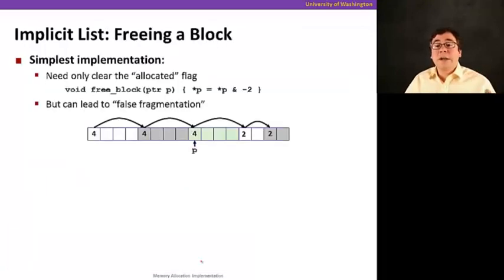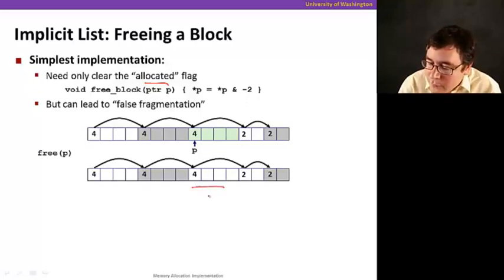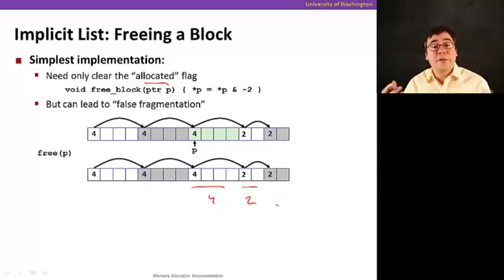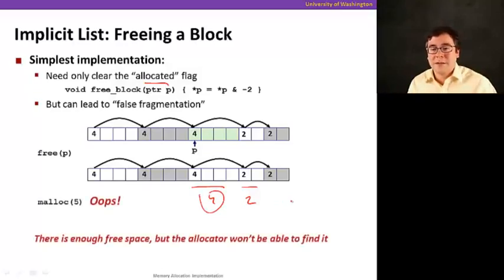So, well, now how do we free a block? Well, the simplest way is to just clean, is just to clear the allocated flag. So, we can do this, just allocate, we just clear the bits by masking it out. But this is bad because it can lead to false fragmentation. So, now I have a free block of four here and a free block of two here. Why not just make it look like a block of six? Because if we don't, later if I do need a block of size six, I'm not going to be able to honor it because I'm going to think I don't have one enough. But this is not real fragmentation, but it looks like real fragmentation. So, that's a big oops, what's the problem? Now, I want to allocate five, then I can't honor it. So, there's enough free space, but the allocator won't be able to fit it just because it got a little confused.